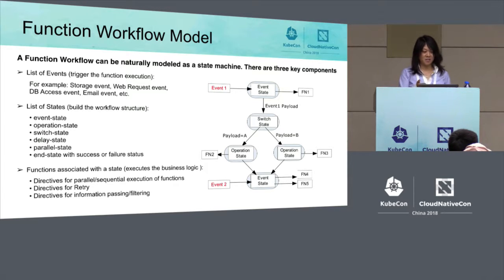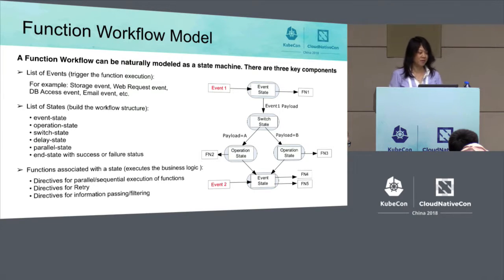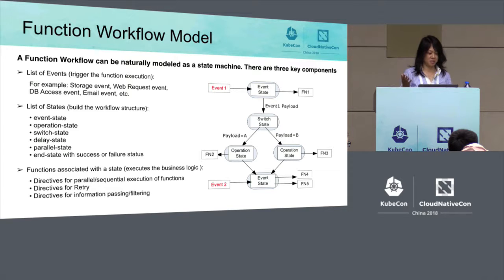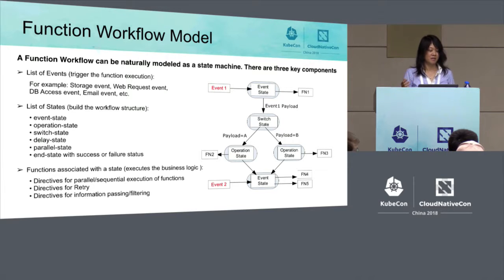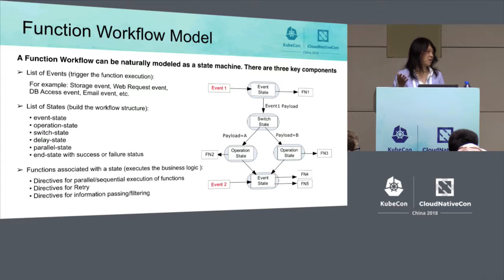This slide shows an example of the workflow model. There are three key components. The first is a list of events that trigger the function execution. The second is a list of states that build the workflow structure. The third are functions associated with a state that execute the business logic. Different applications have different functions and different business logic — that's the developer's job to write.